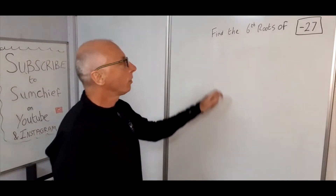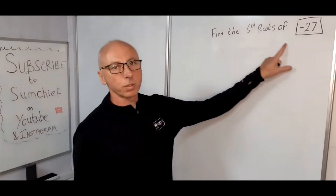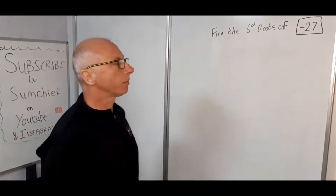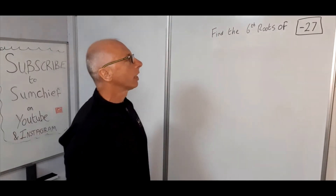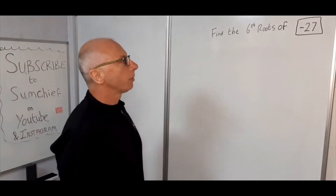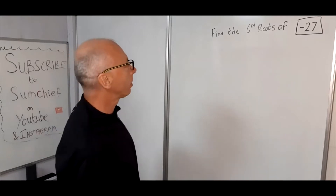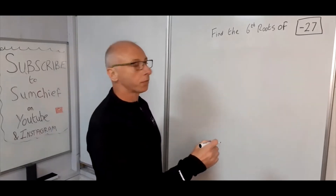In this video we're looking for the sixth roots of minus 27. The way we can find this is to use Euler's formula.